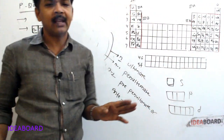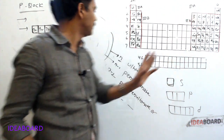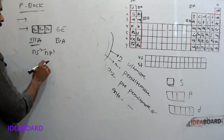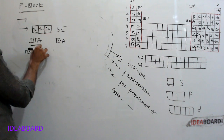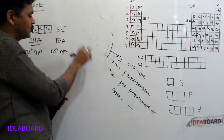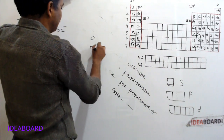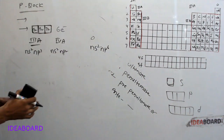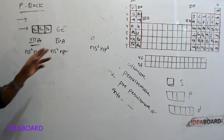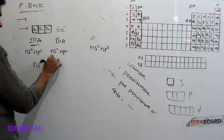For example, boron is 1s2, 2s2, 2p1 — the valence electron is in the P orbital, so it belongs to P block. For third A group: Ns2, Np1; fourth A group: Ns2, Np2; fifth A group: Ns2, Np3; sixth A group: Ns2, Np4; seventh A group: Ns2, Np5; and zero group: Ns2, Np6. So for P block elements in general, the configuration is Ns2, Np1-6.